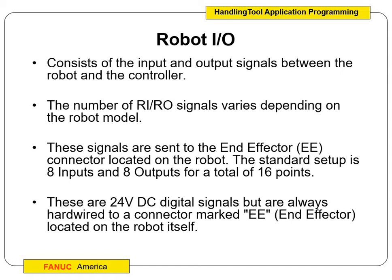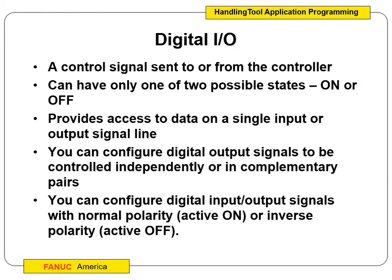Robot I/O is all the input and output signals between the robot and the controller. So maybe there's some feedback going on — maybe there's a camera on the end of it or something the tool is doing. All those robot inputs and outputs depend on the robot model. They come from the end effector, which we call the EE, and that's located on the robot. The standard setup for most robots is eight inputs and eight outputs for a total of 16 points on the robot, and they're 24-volt controls, marked with EE so we know they're going through the end effector.